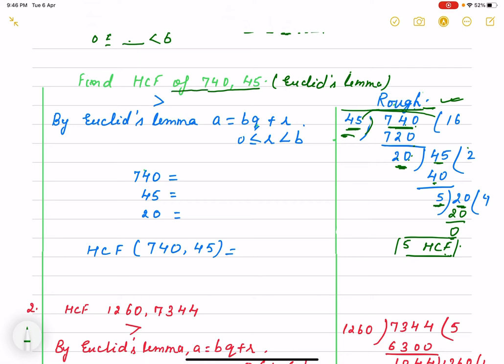So, first step is that find HCF of 740 and 45 using Euclid's lemma. What we do? We compare what which one is bigger and which one is smaller. So, here 740 is greater than 45. That's why we are taking its dividend.